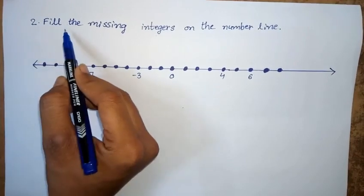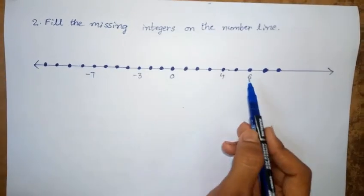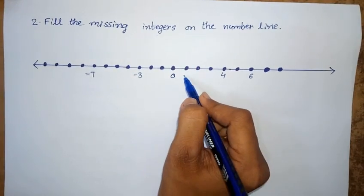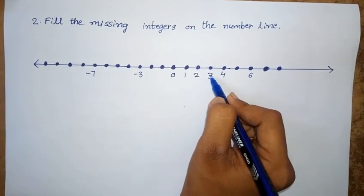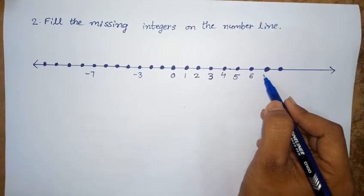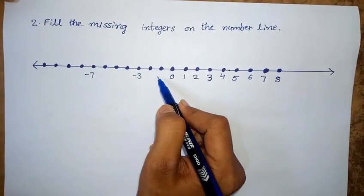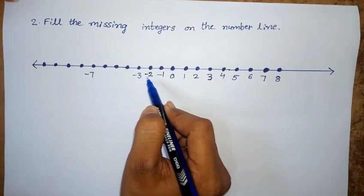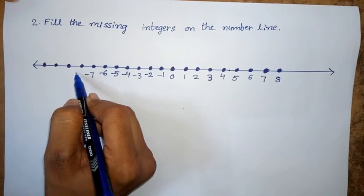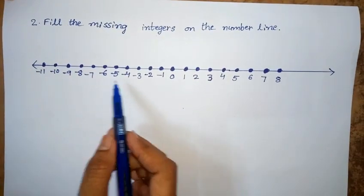2nd Roman: Fill the missing integers on the number line. The middle number is 0. All numbers to the right of 0 are positive, and all numbers to the left are negative. From 0, going right: 1, 2, 3, 4 (given), 5, 6 (given), 7, 8. Going left from 0: minus 1, minus 2, minus 3 (given), minus 4, minus 5, minus 6, minus 7 (given), minus 8, minus 9, minus 10, minus 11. These are the missing integers on the number line.